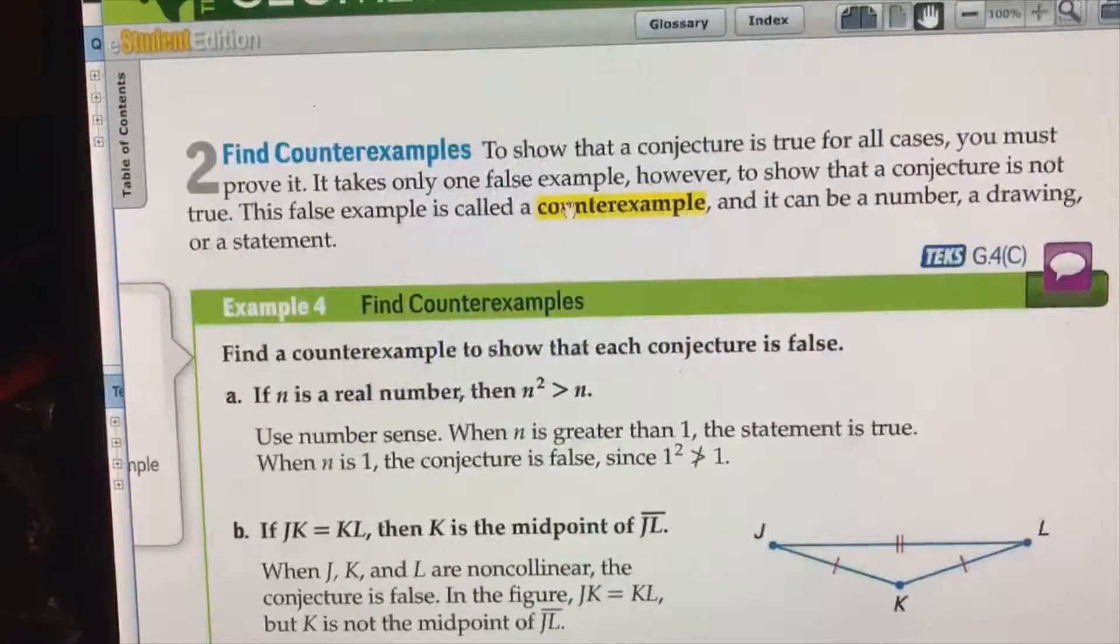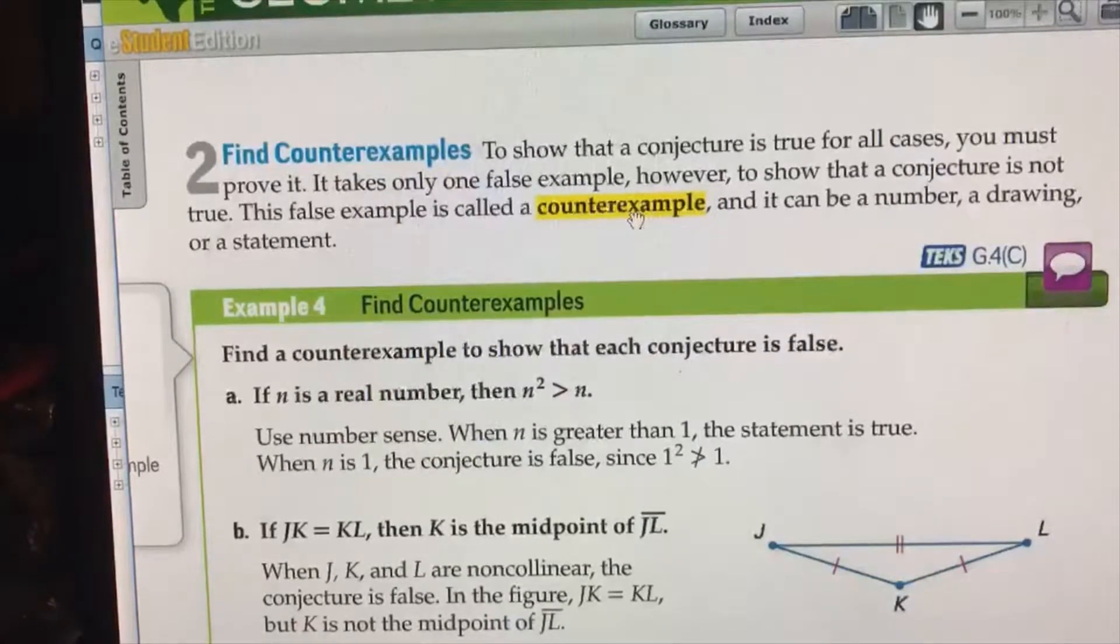Highlighted in yellow is called a counterexample. The definition of a counterexample is to show that a conjecture is not true. If you find one possible conjecture that can prove it false, then that's your counterexample.